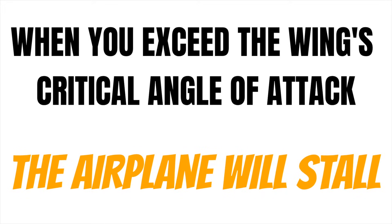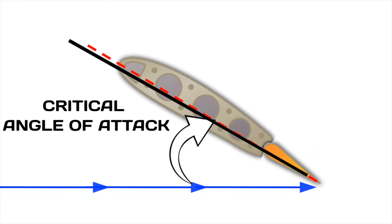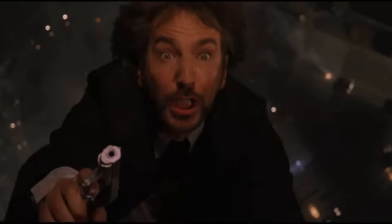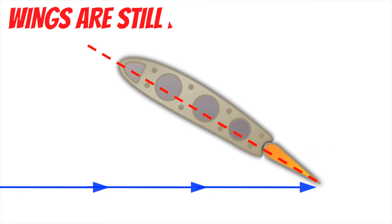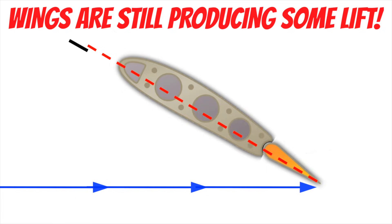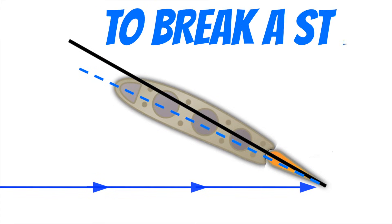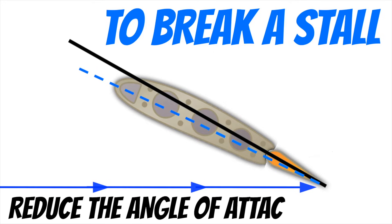Airspeed does not matter. When you exceed the airplane's critical angle of attack and it stalls, the wings are still producing some lift — if they weren't, you would literally fall to your death if you stalled the aircraft. So how do you fix a stall? All we have to do is reduce the angle of attack. To break the stall, the most important thing we can do is reduce our angle of attack by pitching down or releasing some of that back-stick pressure on the yoke. This will get us below our critical angle of attack so the wings can start producing lift again.